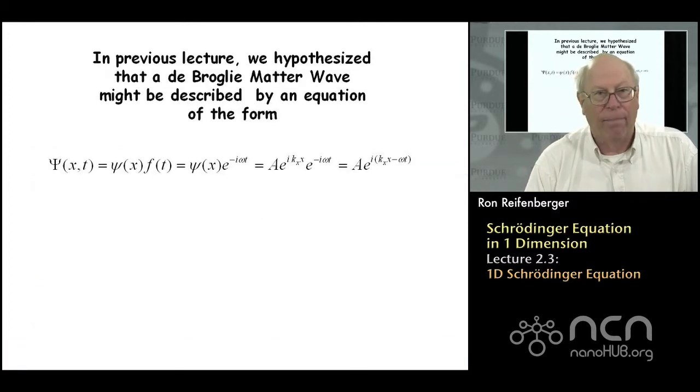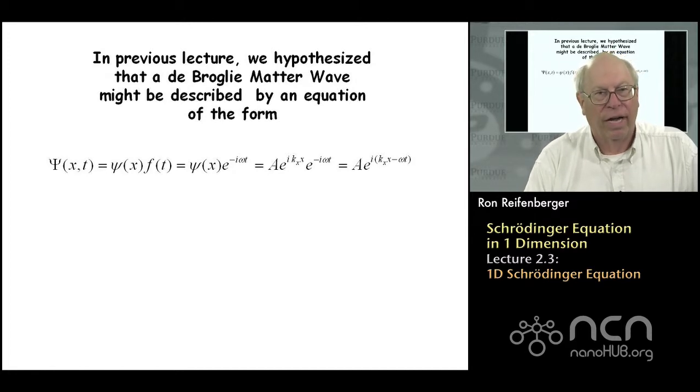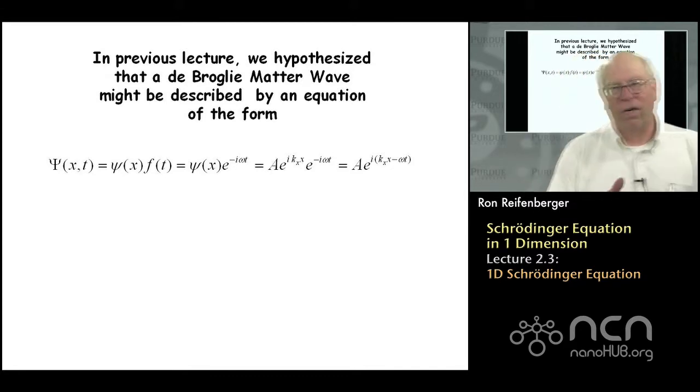If I can recap what we established in the last lecture, I'd like to do that up front. What we said is we were going to invent a function called capital Psi of X and T. This function is going to describe how the de Broglie wave changes in space and time.